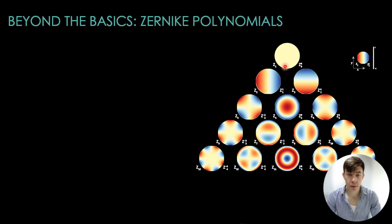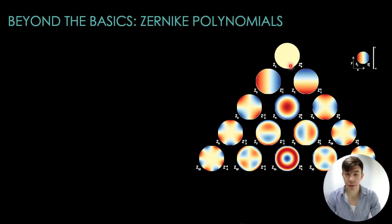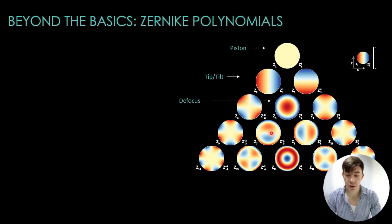Each shape in this pyramid represents a Zernike polynomial. They are arranged in order of increasing complexity, from simple piston and tilt at the top to higher-order aberrations like coma and spherical aberrations at the bottom.